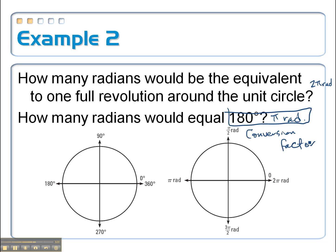In other words, if I want to convert from degrees to radians, or radians to degrees, I would use this conversion factor. It's just like if I'm going to convert from inches to feet, I would say 12 inches is equal to 1 foot. That's a conversion factor.